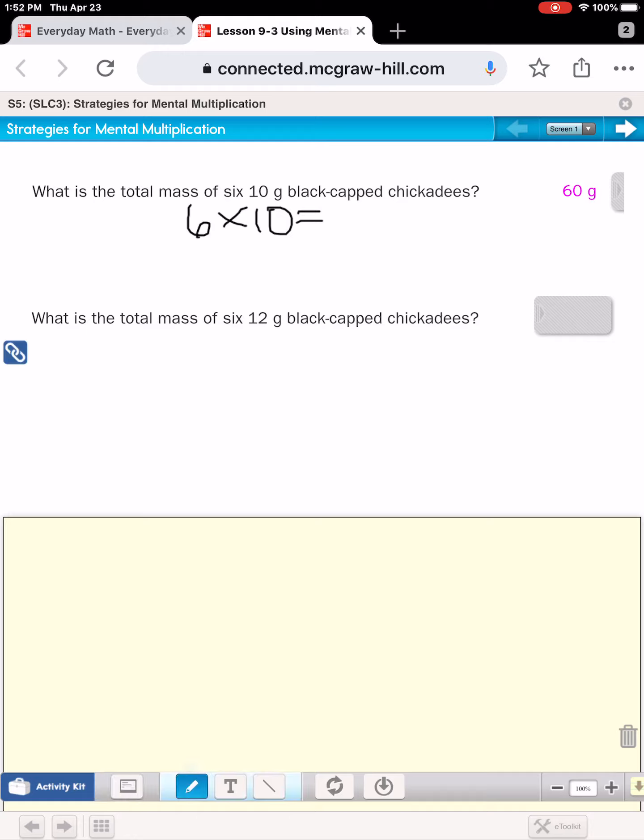Let's look down at the next question. It says, what is the total mass of six 12 gram chickadees? So in this case, we're trying to solve six times 12. Now, for most of us, multiplying by 12 is not as easy to do mentally as multiplying by 10. So the strategy that I'd like you to use is to break 12 up into easier numbers. So instead of six times 12, we could think of it as six times 10 and six times two. Six times 10 is 60. And we know that six times two is 12. And I would add those two products to see that six times 12 is 72.